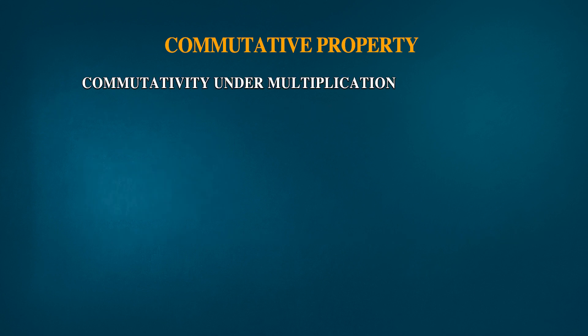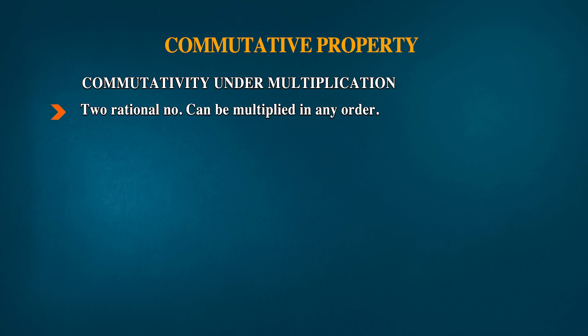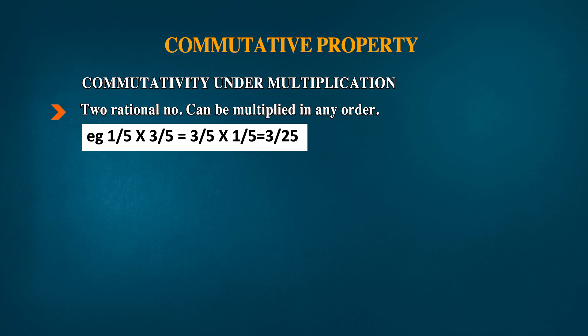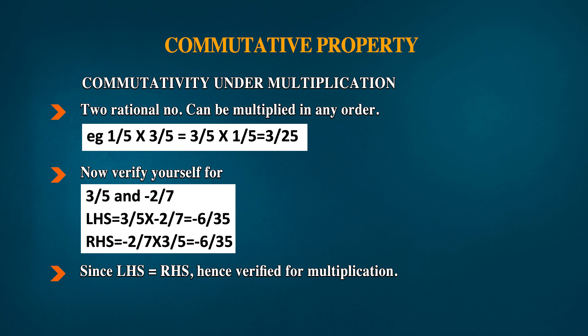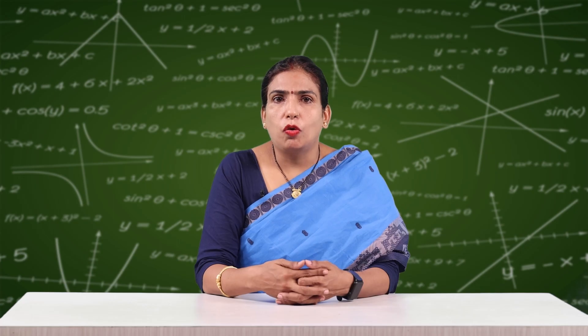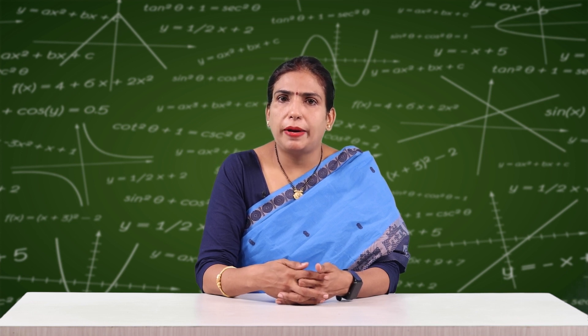Commutativity under multiplication: two rational numbers can be multiplied in any order. For example, 1/5 × 3/5 = 3/25 and 3/5 × 1/5 = 3/25 — same answer. Verify for 3/5 and -2/7: left-hand side (a × b) = 3/5 × (-2/7) = -6/35. Right-hand side (b × a) = (-2/7) × 3/5 = -6/35. Both sides are equal, so for any two rational numbers a and b, a × b = b × a.